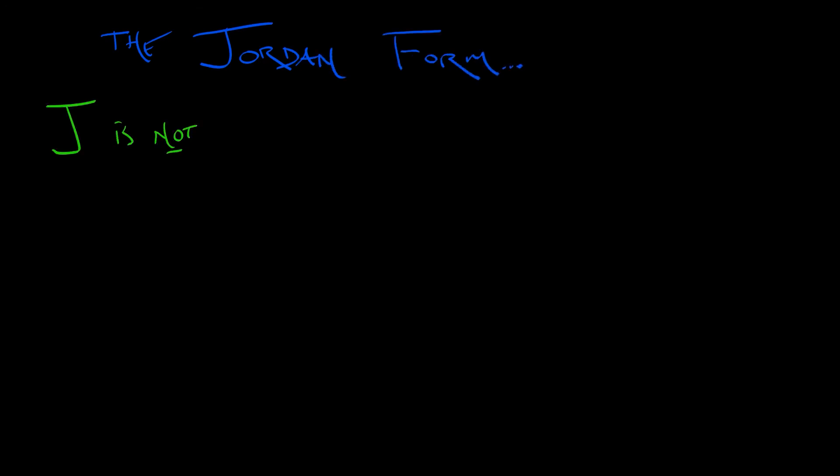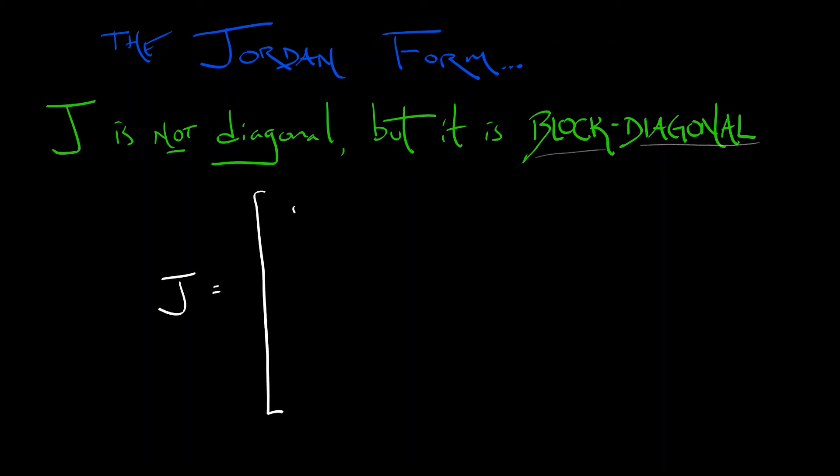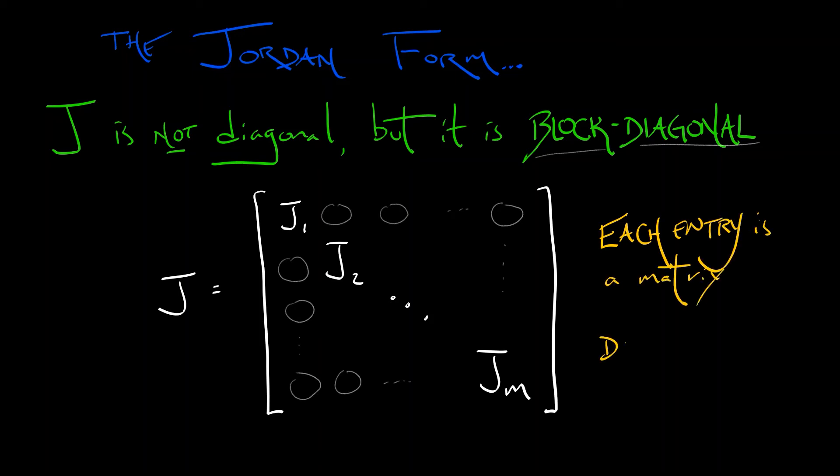J is not a diagonal matrix in general, but it is block diagonal. That means we can write J as a diagonal matrix where each entry is itself a matrix. All those terms along the diagonal—J₁, J₂, up through Jₘ—are square matrices. Everything else is filled with zero matrices.